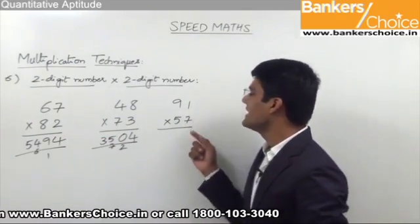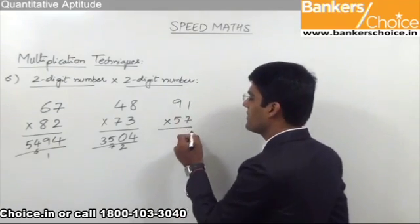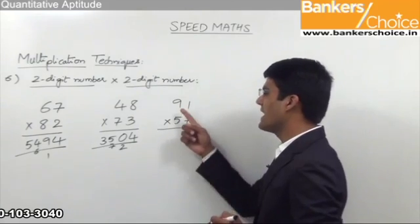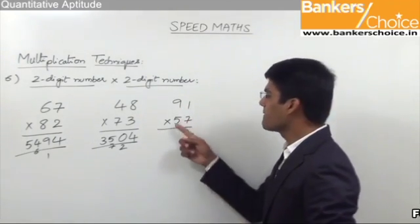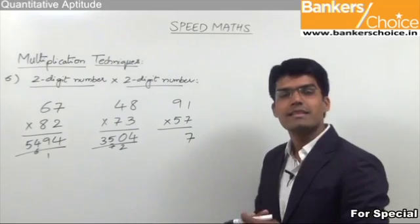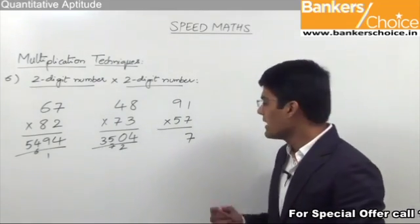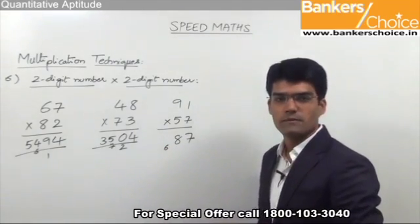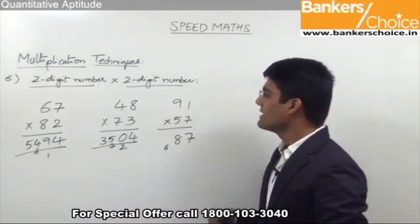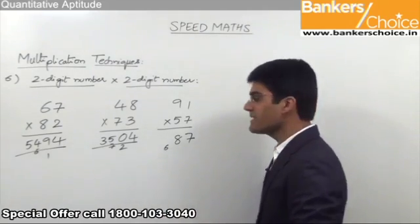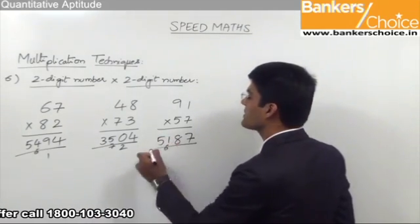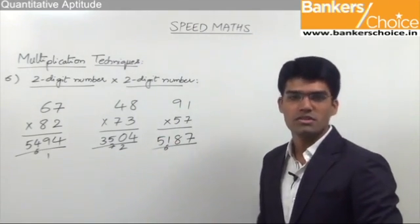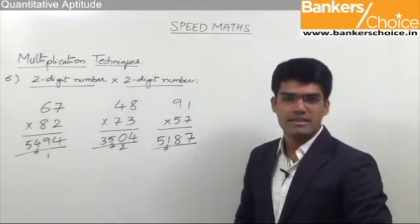The last question is 91 into 57. The first step: 1 into 7 is 7. Second step is cross multiplication: 9 into 7 is 63, and 5 into 1 is 5. 63 plus 5 is 68. As we have no carry, we take 8 in the answer and 6 is carried forward. The last step: 9 into 5 is 45. 45 plus 6 is 51. So the answer for this question is 5187. This is how quickly we can multiply two-digit numbers if we follow this three-step technique.